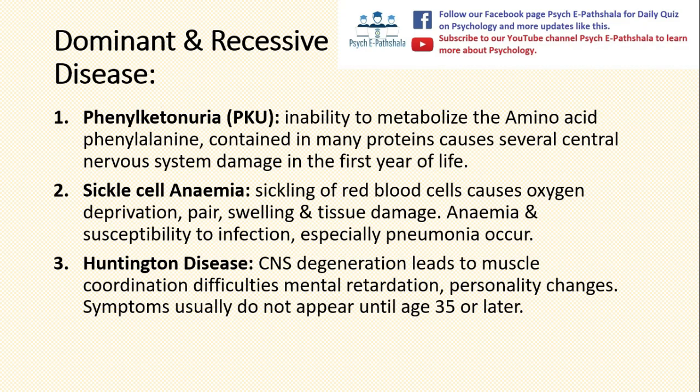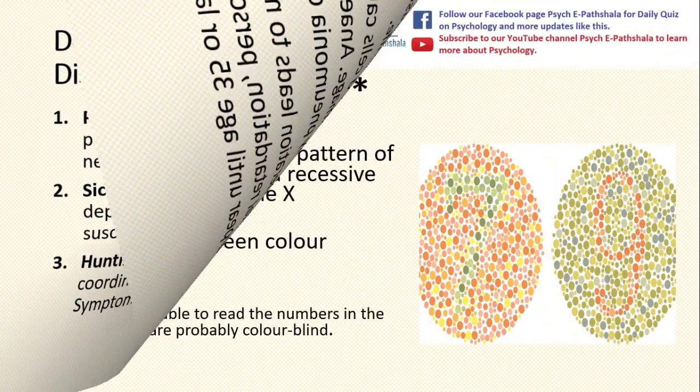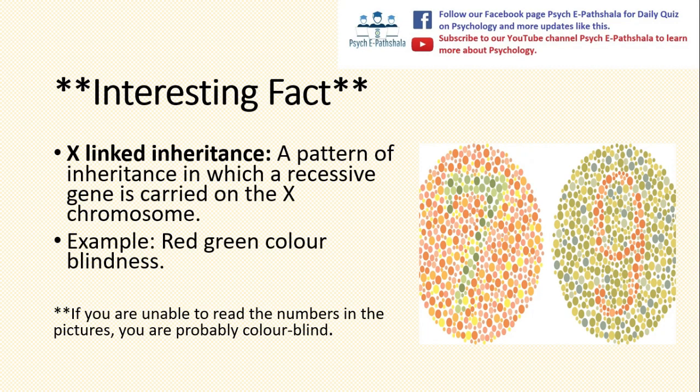Anemia and susceptibility to infection, especially pneumonia, occur in sickle cell anemia. The third disease is Huntington's disease, characterized by CNS degeneration which leads to problems of muscle coordination difficulties, mental retardation, and personality changes. Symptoms usually do not appear until the age of 35 or later.